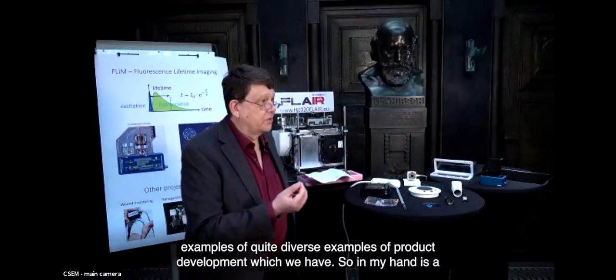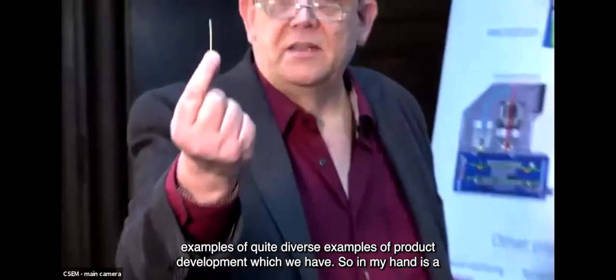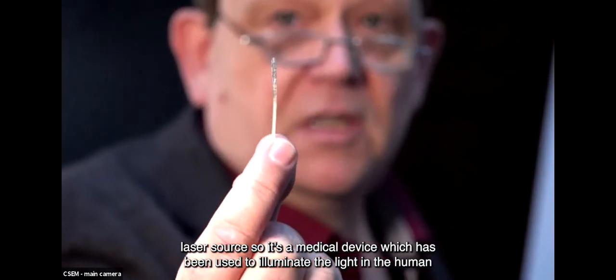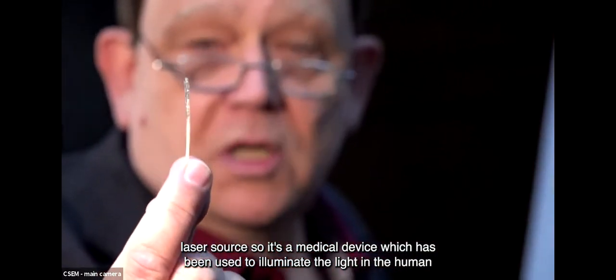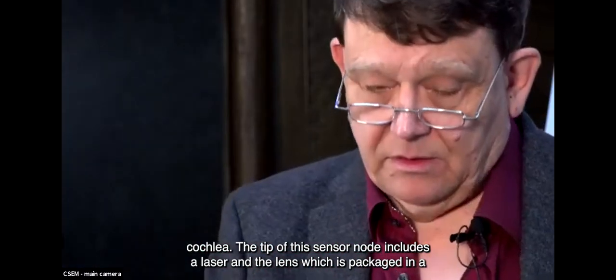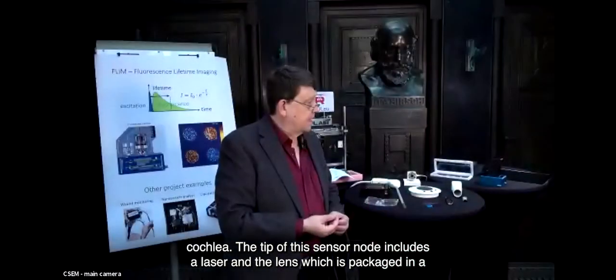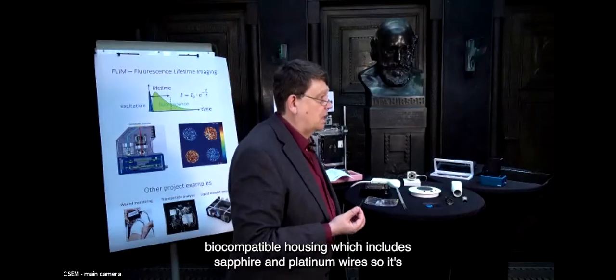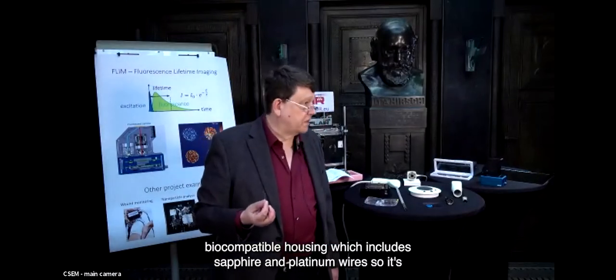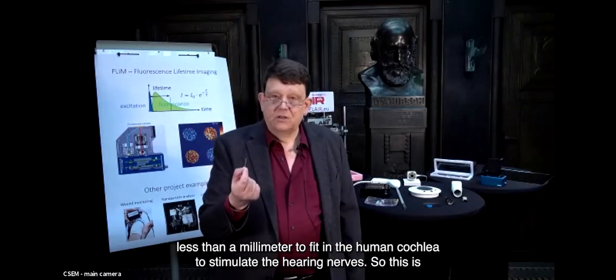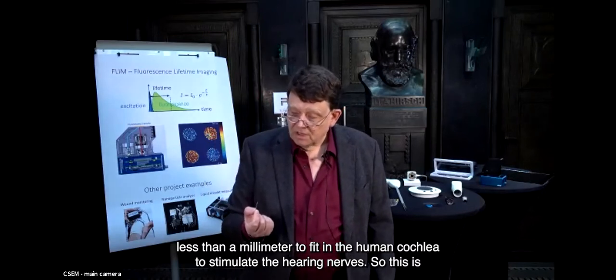I've brought three examples of diverse product developments. In my hand is a very tiny device that looks like a match - it's a laser source, a medical device which has been used to illuminate light in the human cochlea. The tip of this sensor node includes a laser and a lens packaged in a biocompatible housing which includes sapphire and platinum wires. It's less than a millimeter to fit in the human cochlea to stimulate the hearing nerves.